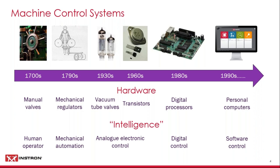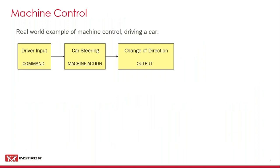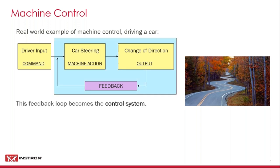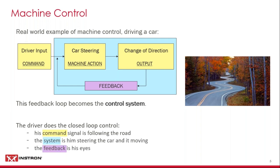A real-world example of this control system would be a car. You've got the driver as the human giving the input, the steering as the machine action, and the output you're expecting is the car changing direction. This control system would be fine if you were racing NASCAR and just turning slightly left the whole time. But as soon as you need a change in direction, you require feedback so the output is constantly changing. In this example, the driver closes the loop on this feedback — the command is the driver following the road, the system is the steering, and the feedback is the driver's eyes seeing what's ahead.